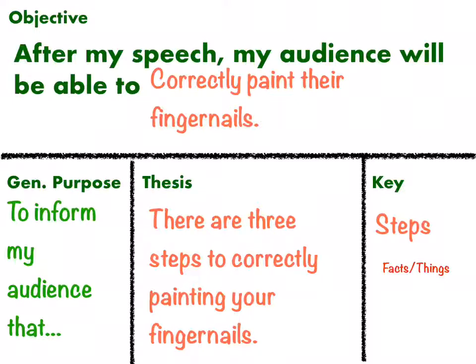Another thing to think about with a key word is one that's 'reasons why' or 'benefits' — those have a tendency to be persuasive. For example, an informative speech would be: there are three reasons why the Civil War started. A persuasive speech would be: there are three reasons why you should drink water every day. So stick with the informative and avoid the persuasive.